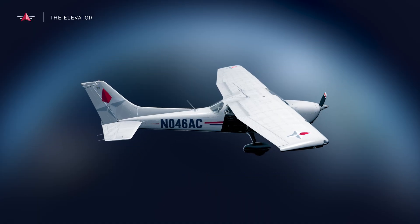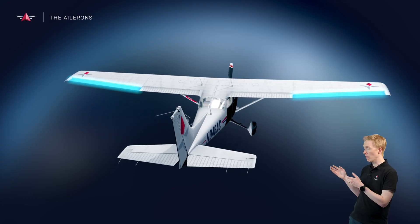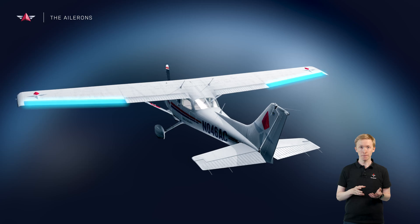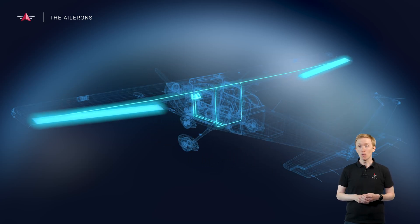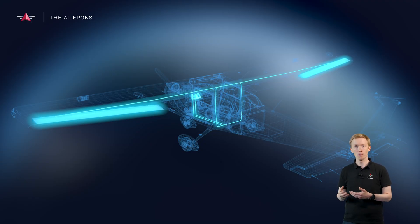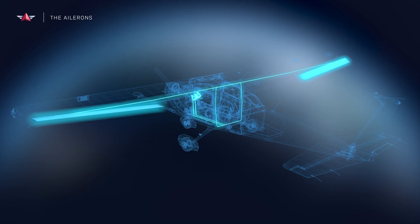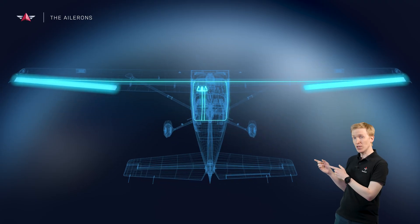Our next control surface is the ailerons. There are actually two ailerons on the Cessna, one on each wing. They are both connected by a linkage mechanism, and with the help of this linkage both surfaces actually move together, ensuring that when one moves up the other moves downwards. When we shift our control device to either the left or the right, one of the ailerons is deflected upwards and the other is deflected downwards.